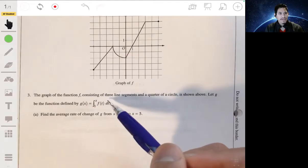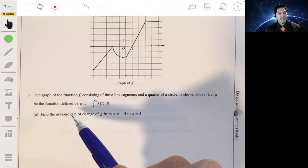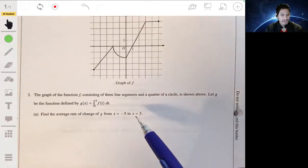And we have G defined by this integral. So we got to find the average rate of change of G from x equals negative 5 to x equals 5.